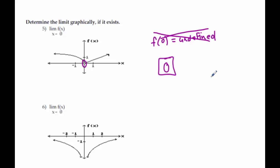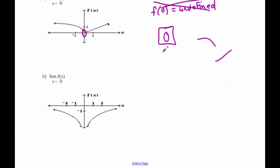What we're looking for with limits is: do they meet? Like this one did. Or if we had a situation where we're coming from each direction and they're not meeting up, that means the limit does not exist. On number six, as we come at it from both directions — from the negative side I'm headed toward negative infinity, and from the positive side I'm also headed toward negative infinity.